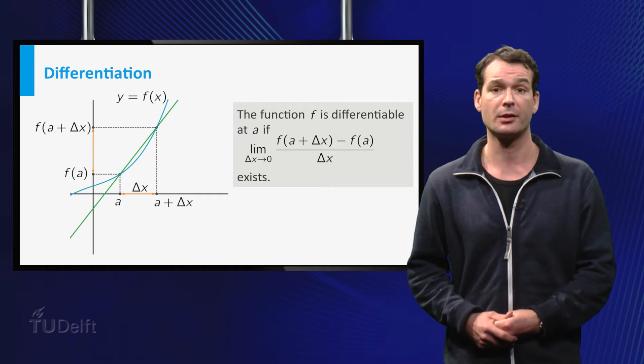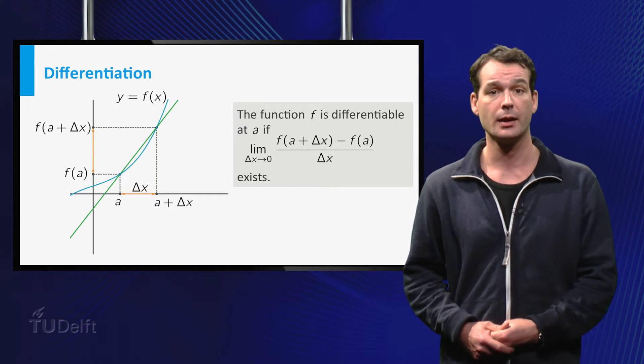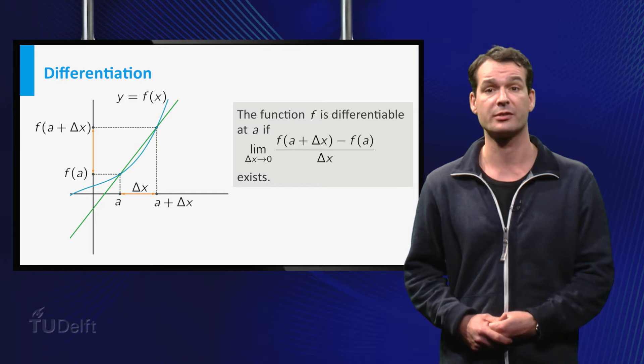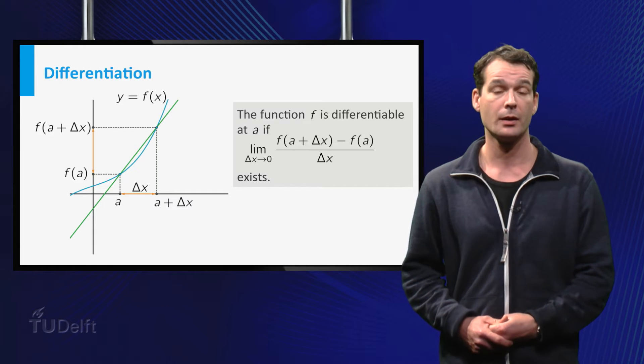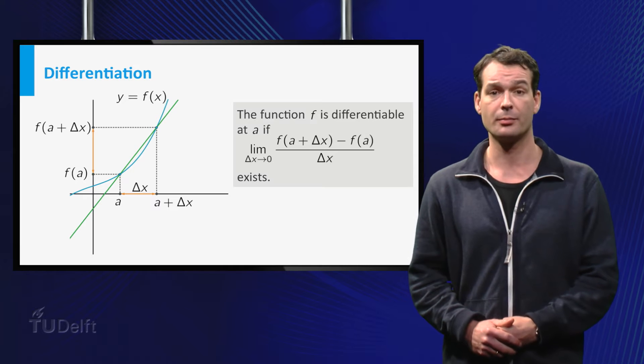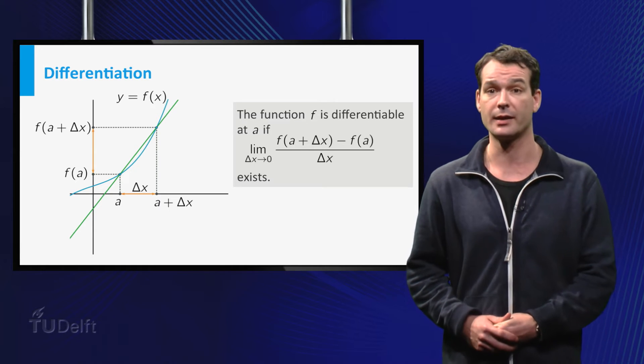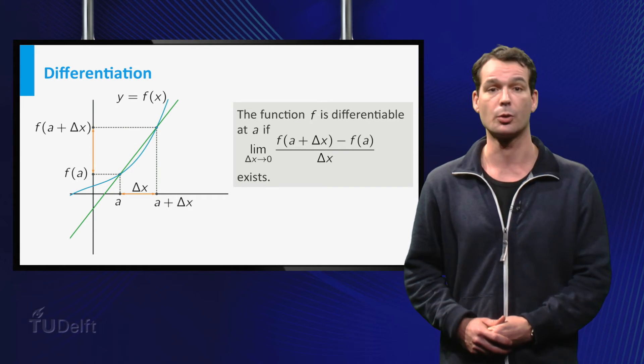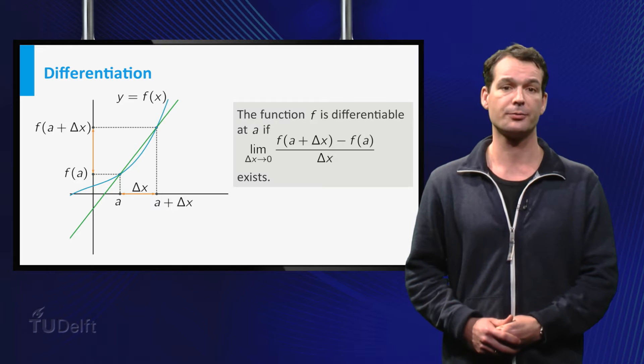Graphically, the difference quotient is the slope of the green line and in the limit it approximates the slope of the tangent line. So a function is not differentiable at A if this limit does not exist, meaning that there is no tangent line at A, at least not with a finite slope. Let's look at a few examples.